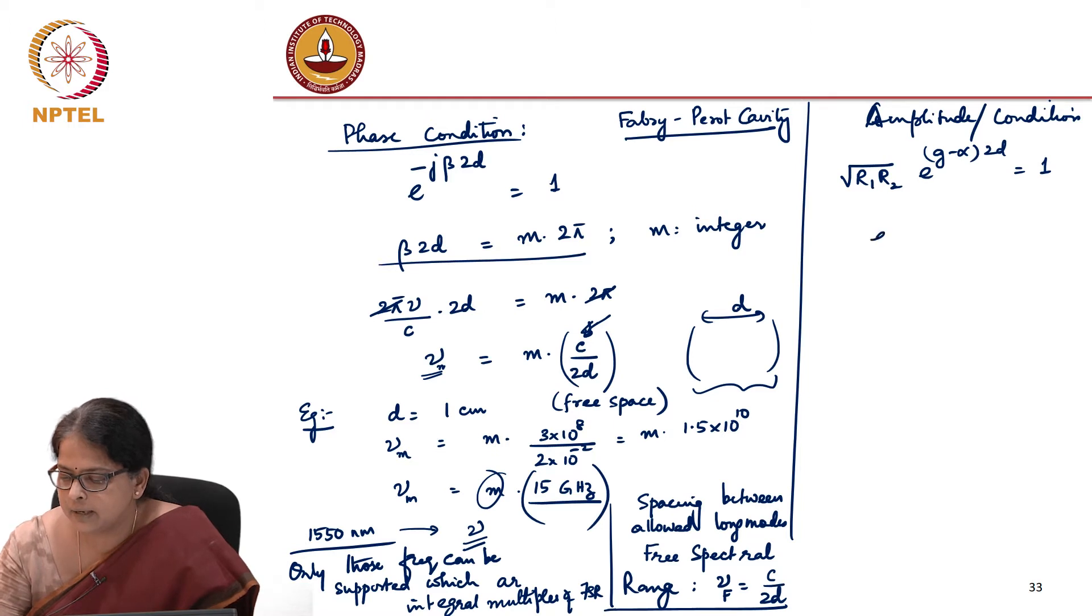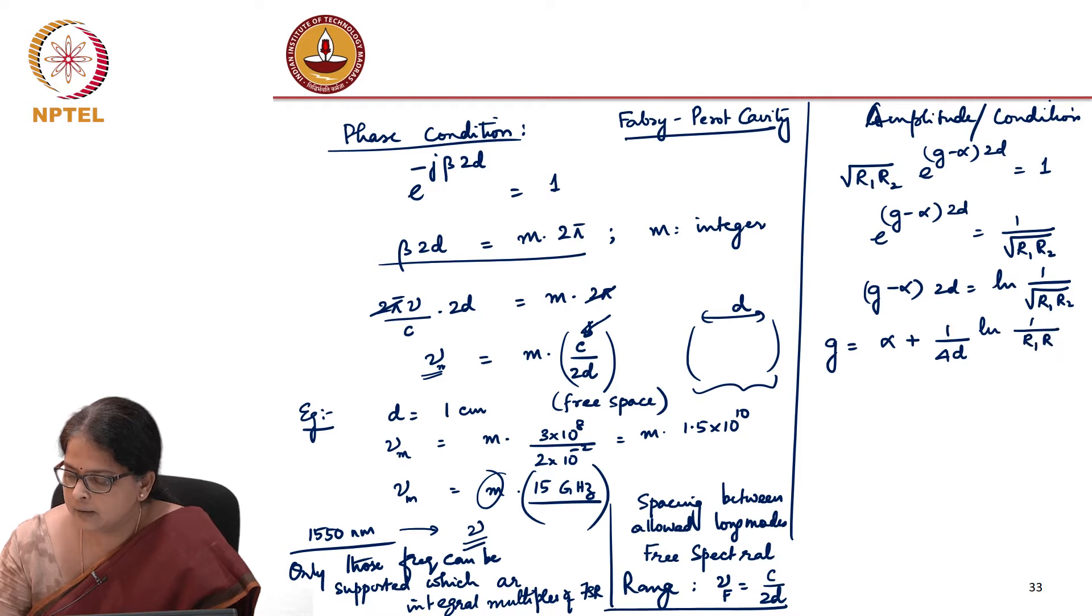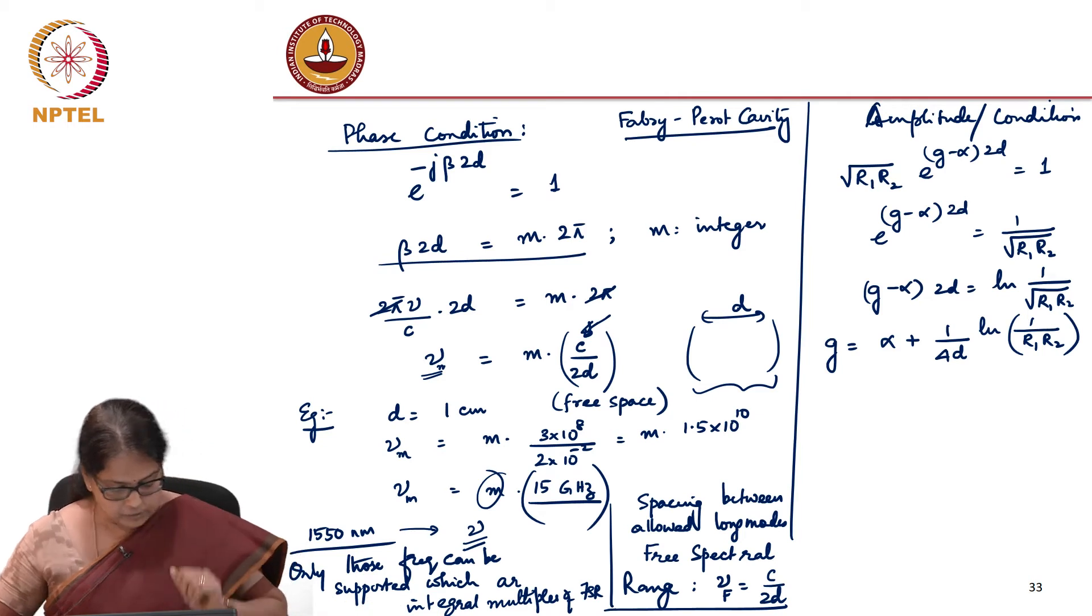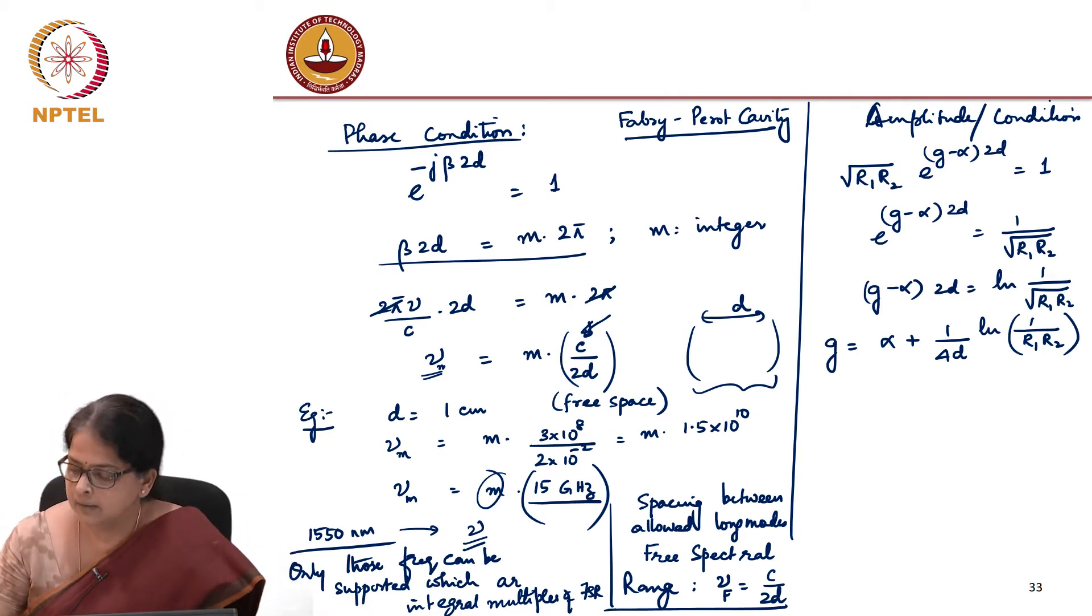And the answer is here. You can immediately calculate that e^(-g - α)×2d = 1/√(r₁r₂), which tells us that (g - α)×2d = ln(1/√(r₁r₂)). So your g = α + 1/(4d) × ln(1/(r₁r₂)^(1/2)), which is what I have used here as 4 here.